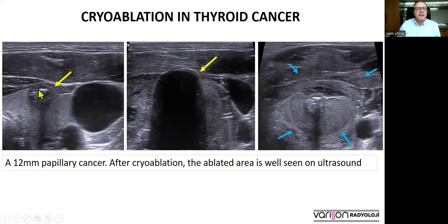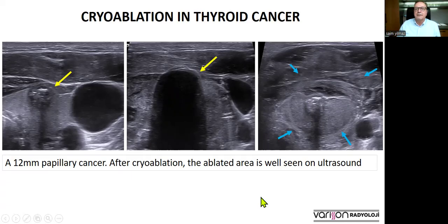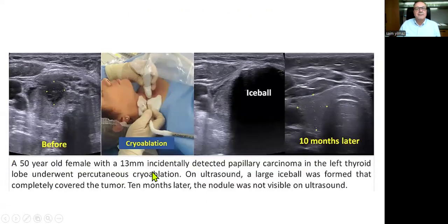This patient had a 12-millimeter papillary cancer. You see the ice ball during the cryoablation. After the ice ball is melted, you still see the cryoablated area as a relatively gray area compared to the normal thyroid parenchyma. This is very important because at the end of the procedure, you can make sure that the nodule or the cancer is completely included in the ablation area. This is another patient, a 50-year-old female with a 13-millimeter irregular-bordered papillary cancer. You see the ice ball during the procedure. And 10 months later, the thyroid looks almost normal — no nodules, no cancer in this area.